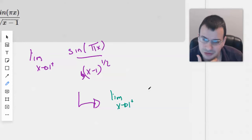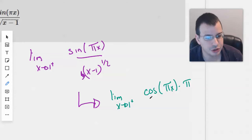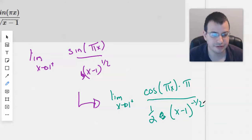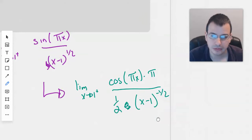Okay. So the derivative of sine is cosine pi x times pi. Because you have to do the chain rule. Take the derivative of the interior. And then we do 1 half times x minus 1 to the negative 1 half.